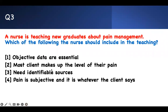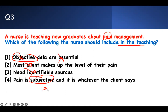Number three: a nurse is teaching new graduates about pain management. Which of the following should be included in the teaching? Pain is very important — they will trap you with this. 'Objective data are essential' — no. You cannot measure somebody's pain objectively. 'Most clients make up their level of pain' — they do not. 'You need an identified source' — you don't. If I tell you I'm in pain, I am in pain. You have to take it.